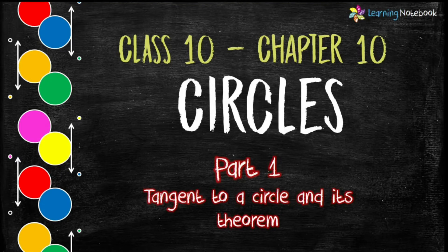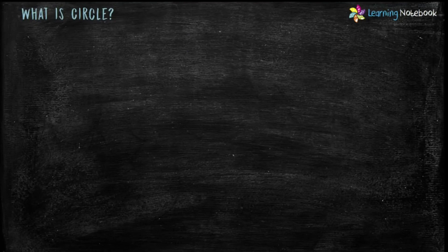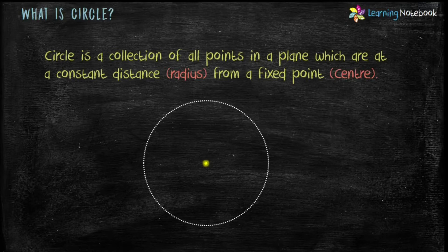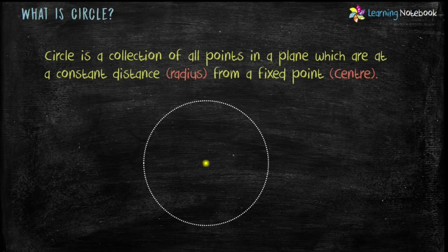In this part 1, we will understand what is tangent to a circle and its theorem. First, let's see what is circle. Circle is a collection of all points in a plane which are at a constant distance from a fixed point. Constant distance is radius and fixed point is center of a circle.